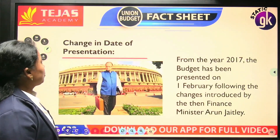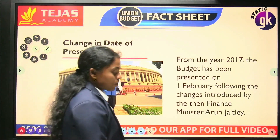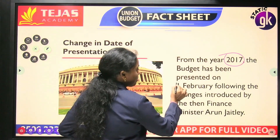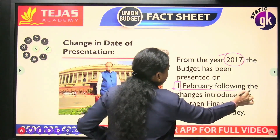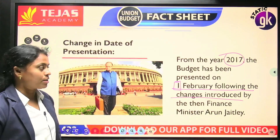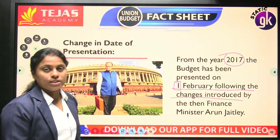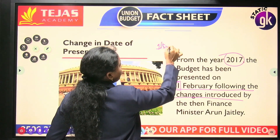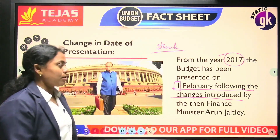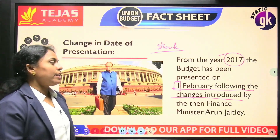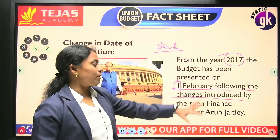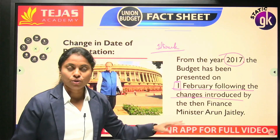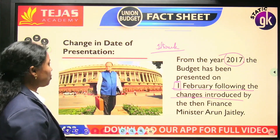Change in the date of presentation — from the year 2017, the budget has been started to be presented on 1st February. When Arun Jaitley was Finance Minister, the budget used to be introduced in the last week of February. But for the first time in 2017, a decision was taken to present the budget on 1st February. That is a new tradition — the decision to move from the last week of February to the first week was taken by Arun Jaitley as Finance Minister.